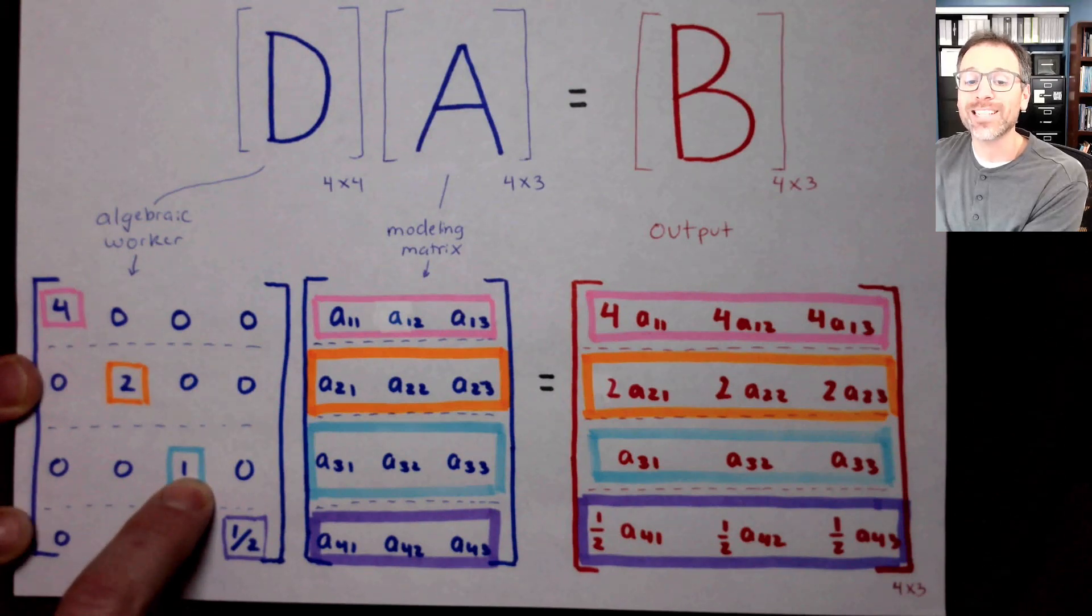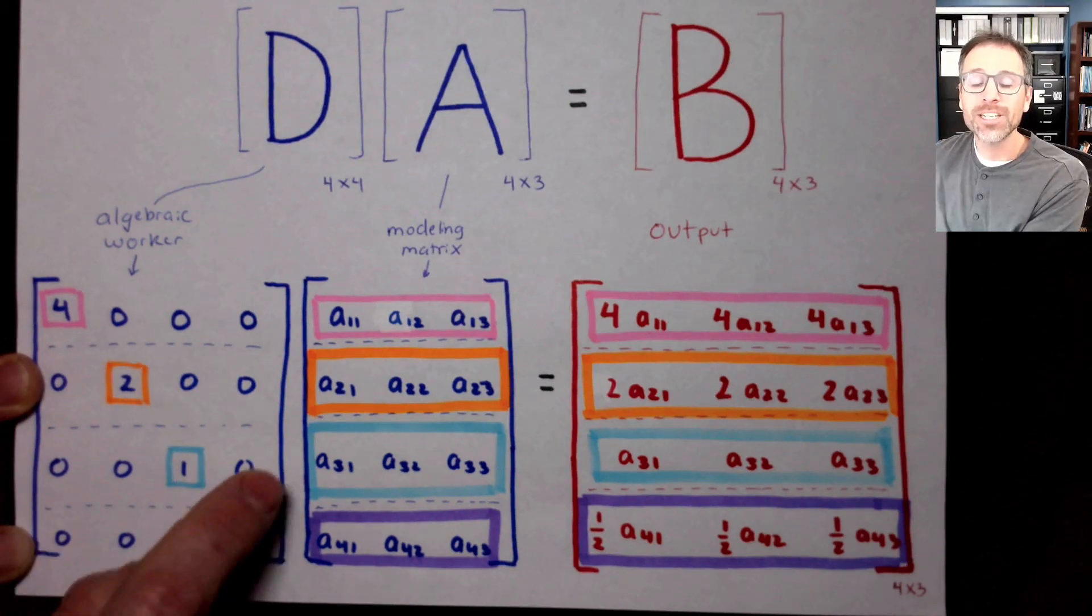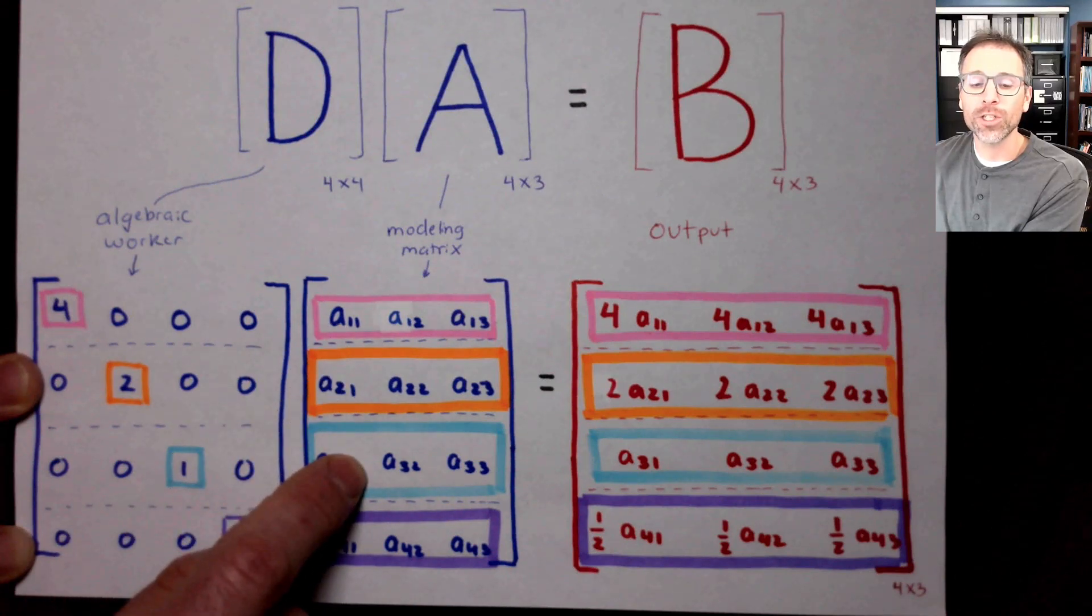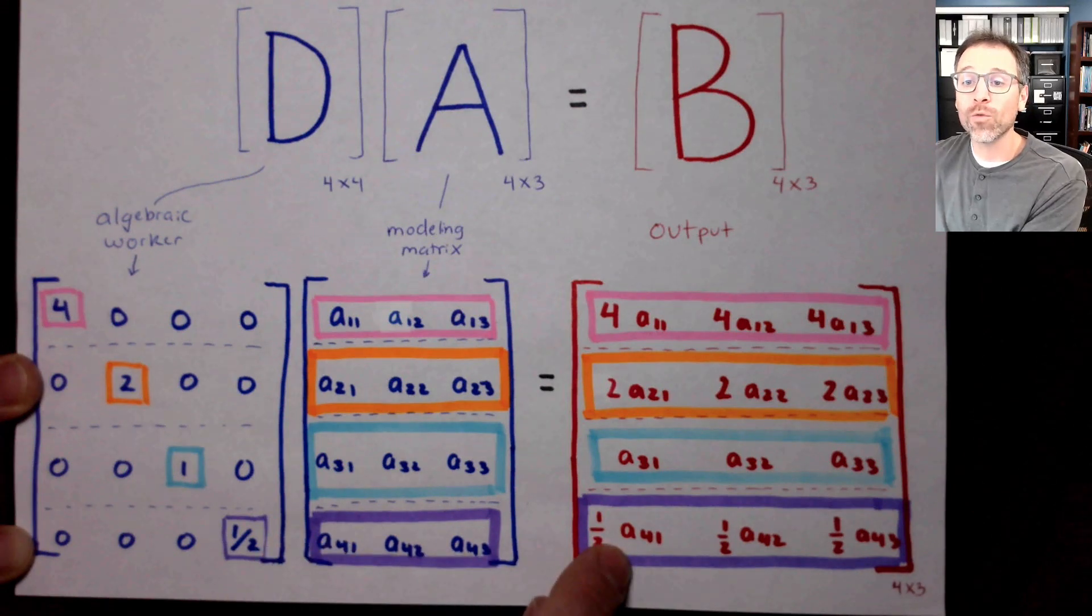And that means that row three of my output is identical to row three of my input. This number is one. That's why it's identical without some other scalar. The fourth row follows the same pattern. These three zeros annihilate access to the first three rows in our linear combination, and I'm left only with one half times row four, which is stored in row four.